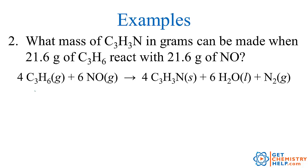Let's try one more example. This reaction is used in the formation of synthetic fibers. We have C₃H₆, called propylene, which reacts with nitrogen monoxide to make C₃H₃N, called acrylonitrile. Acrylonitrile is one of the precursors to making acrylics — a kind of synthetic fiber, like acrylic sweaters. In our reaction, we have 21.6 grams of propylene and 21.6 grams of nitrogen monoxide. We want to know how many grams of acrylonitrile we can make.